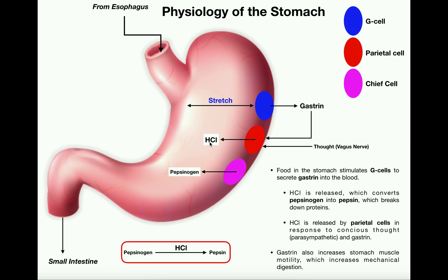The hydrochloric acid in the stomach helps denature proteins — it's very, very acidic. After consuming a meal, the pH of your stomach acid actually falls to about one or two. The parietal cells generate that hydrochloric acid, partly in response to gastrin released from G cells when the stomach wall stretches. Parietal cells will also release HCL in response to another stimulus: conscious thought. When you're hungry and thinking about food, that rumbling in your stomach is because conscious thought stimulates parietal cells to release HCL in preparation for consuming food.